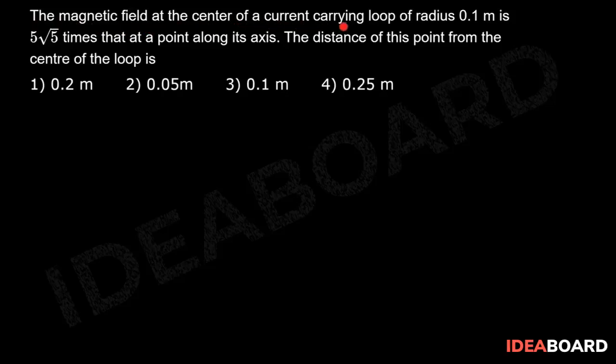The magnetic field at the center of a current carrying loop of radius 0.1 meter is 5 root 5 times that at a point along its axis. The distance of this point from the center of the loop is: